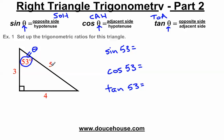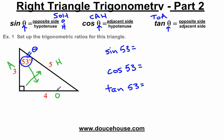Now we need to identify on this triangle what is the opposite side, the adjacent side, and the hypotenuse. The hypotenuse is always opposite the 90 degrees — it's always the longest side. We're focusing on the 53 degree angle here. The side opposite this angle is the opposite side. So sine is the opposite over hypotenuse: opposite is 4, hypotenuse is 5, so this is 4 over 5. So sine 53 equals 4 over 5, and that's it.